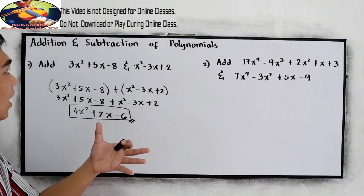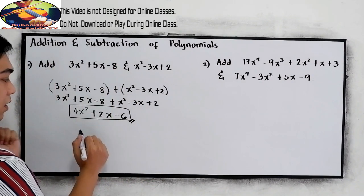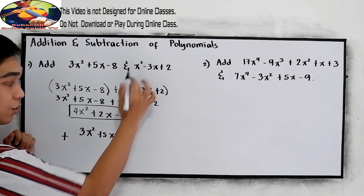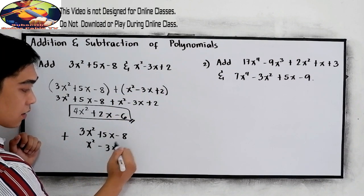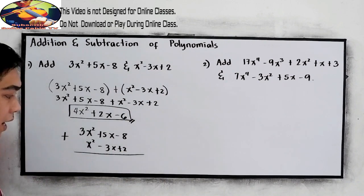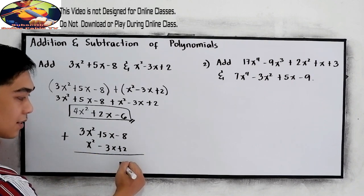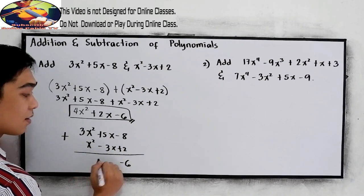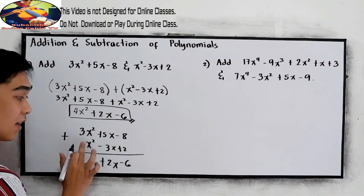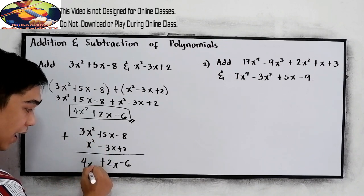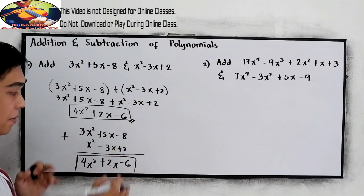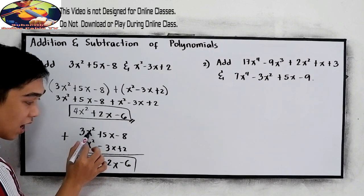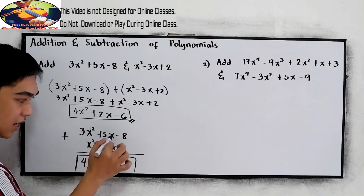The other way to solve addition is to copy 3x squared plus 5x minus 8, then add x squared minus 3x plus 2. Make sure that terms with the same exponent and variable are aligned — align x squared with x squared, align the x terms, and align the constants. Negative 8 plus positive 2 is negative 6; 5x plus negative 3x is positive 2x; 3x squared plus x squared is 4x squared.